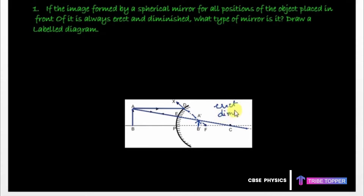Therefore, the image formed by a convex mirror is always erect and diminished, as shown by this diagram.